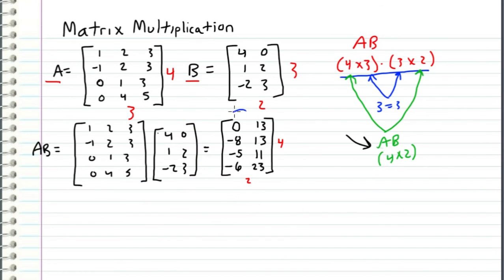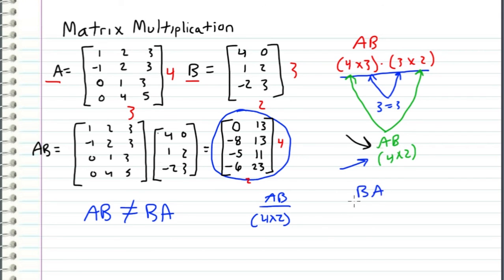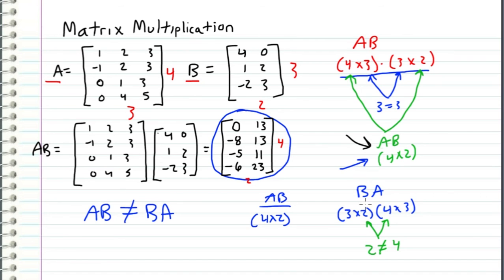We have successfully computed the product of A times B. Something important to note is that A times B is not necessarily equal to B times A — there is no commutative property of matrix multiplication like we have with regular numbers. We can prove this with our example: A times B is a four by two matrix, but B times A would be a three by two matrix times a four by three matrix. The inner dimensions — two and four — are not equal, so we can't even multiply them in that order. Therefore A times B cannot equal B times A in this case.